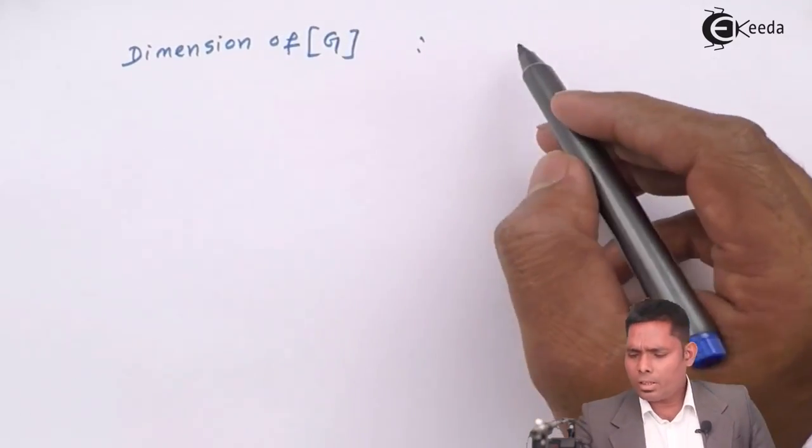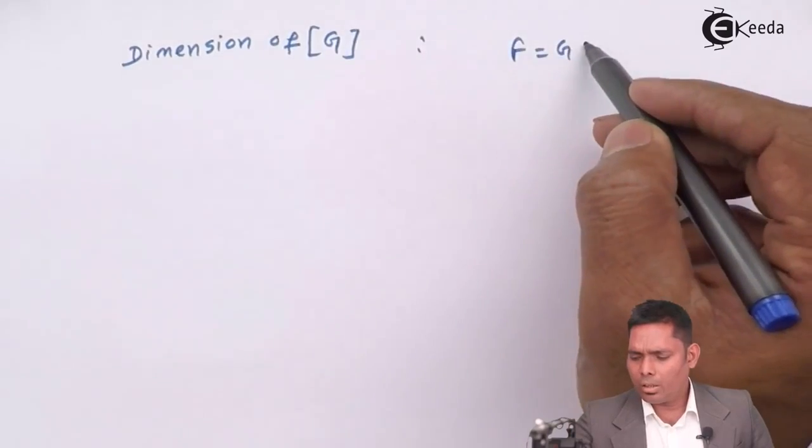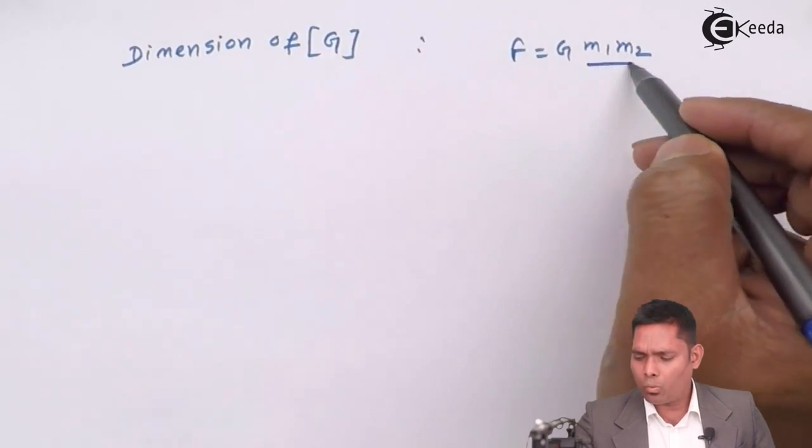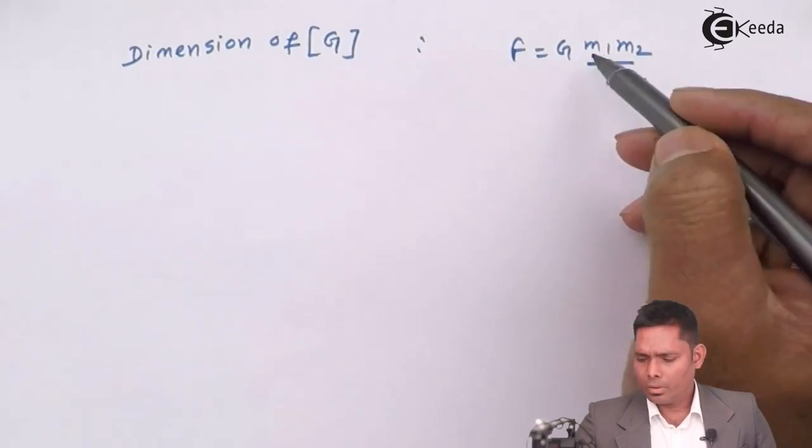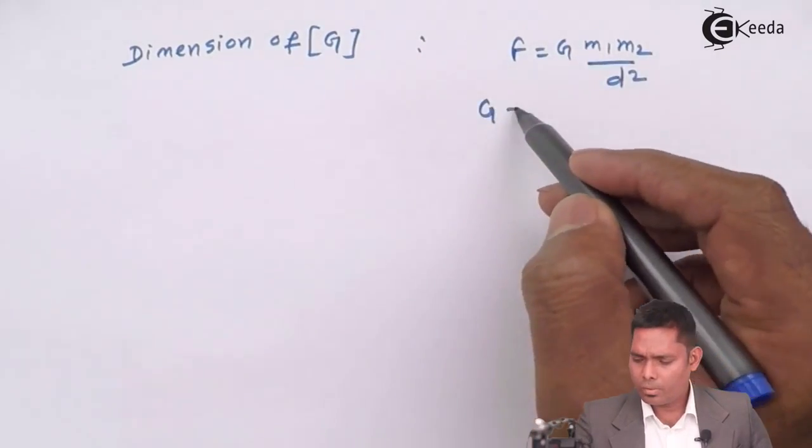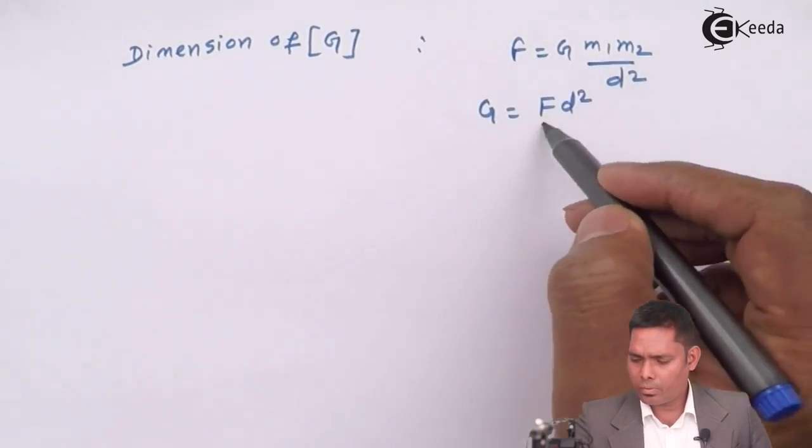F is G M1 M2 over D square. So G is F D square over M square.